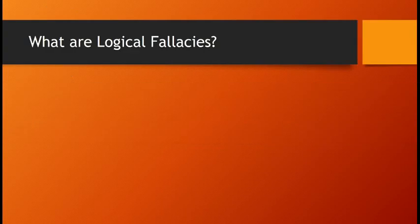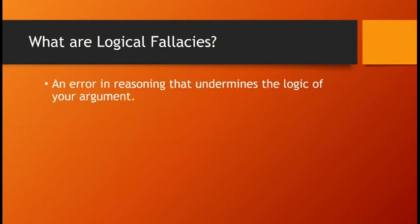So the first thing we need to talk about is what are logical fallacies. The definition is an error in reasoning that undermines the logic of your argument. If you haven't already gotten something to write this down on, you're going to want to take notes. So really it's the opposite of logos — that logical appeal where everything makes sense, everything fits together, and we have facts and statistics to back it up. But a logical fallacy is where all that logic breaks down and there's some type of error or flaw in your reasoning.